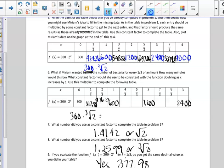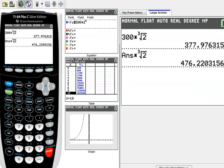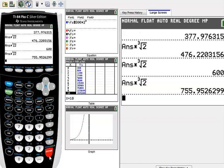So 476.22. We already know at the one-hour mark, we would have 600 bacteria. But just to show you now, I can hit enter on my calculator, and it should multiply by that same common ratio. And I can keep hitting enter to get the next number in my sequence,